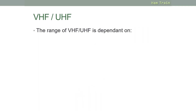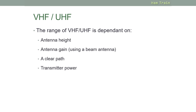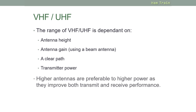The range you can get from VHF and UHF is dependent on several factors: the antenna height, the antenna gain if using a beam antenna such as a Yagi, having a clear path with no obstructions, and the transmitted power. Higher antennas are preferable to higher power, as they improve both the transmit and receive performance.